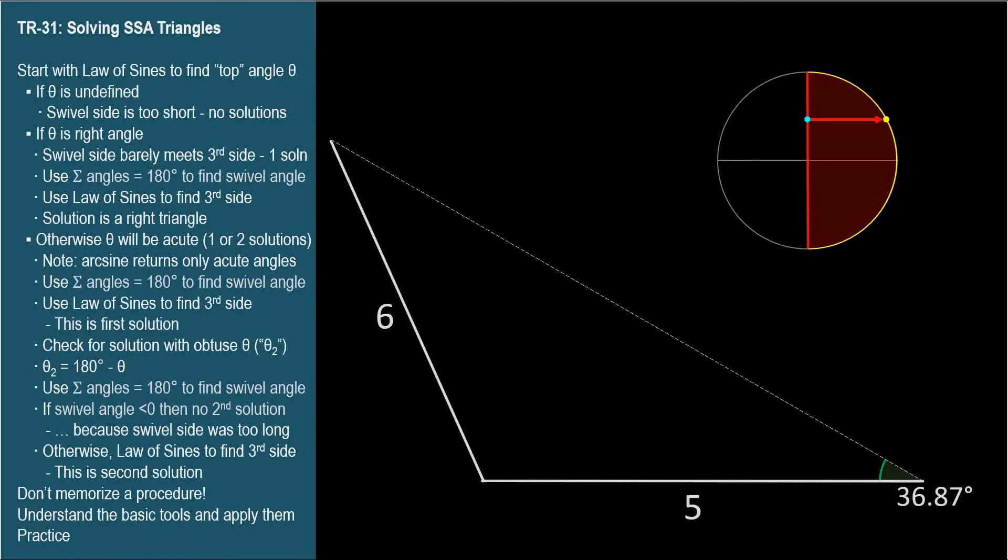The triangle is not to perfect scale. Starting with the law of sines, we find the first angle is 30 degrees. The swivel angle, then, is 180 degrees, minus 36.87, our given angle, minus 30 degrees, our calculated angle for theta. The result is 113.13 degrees.